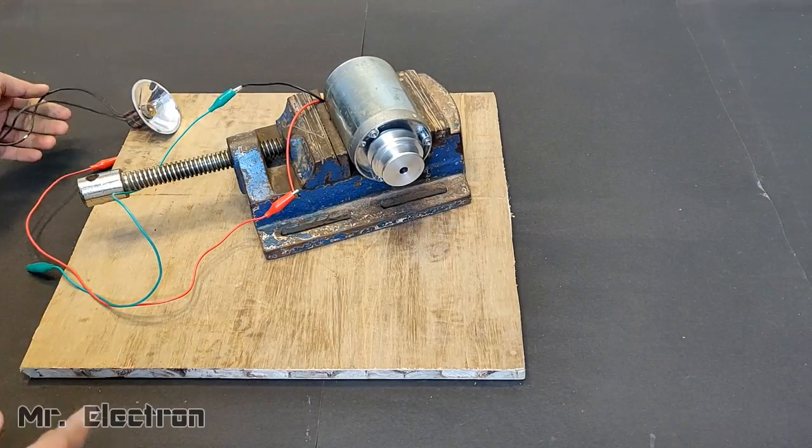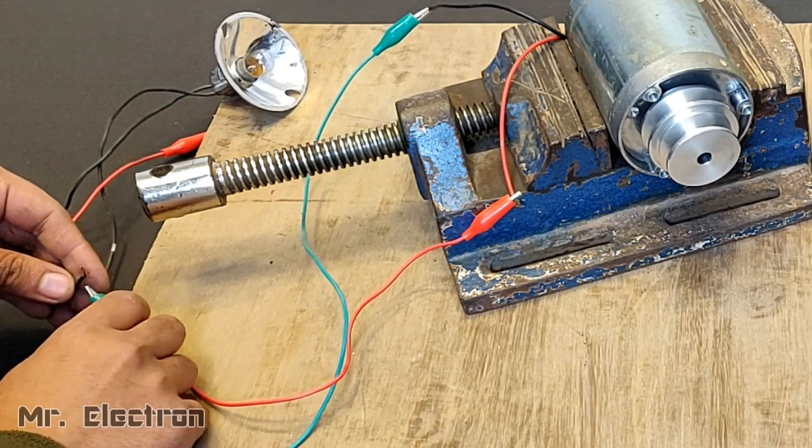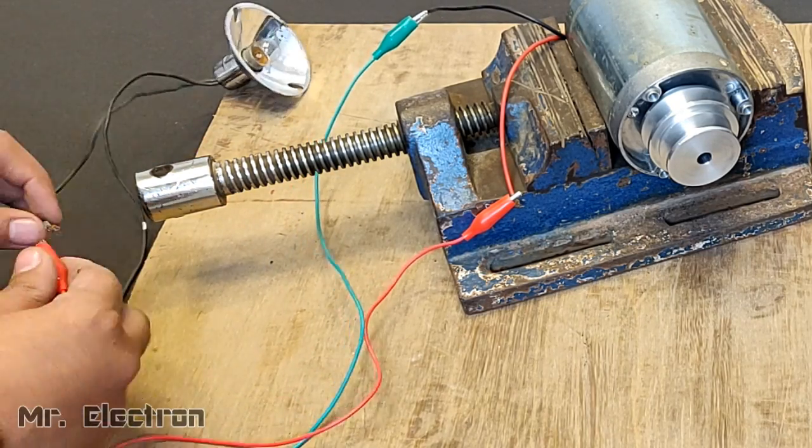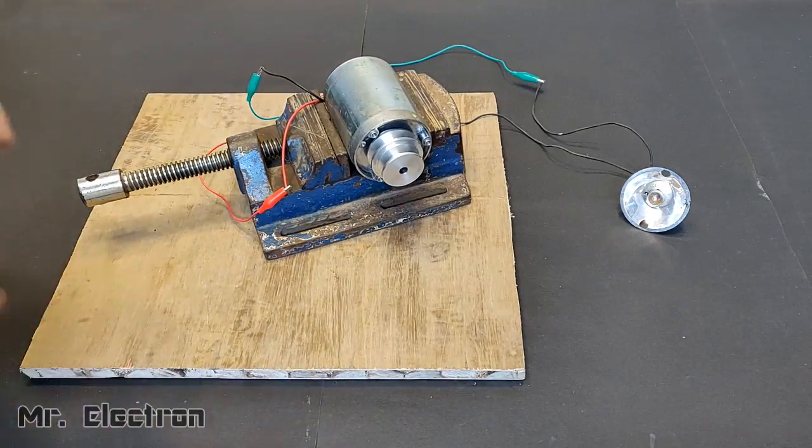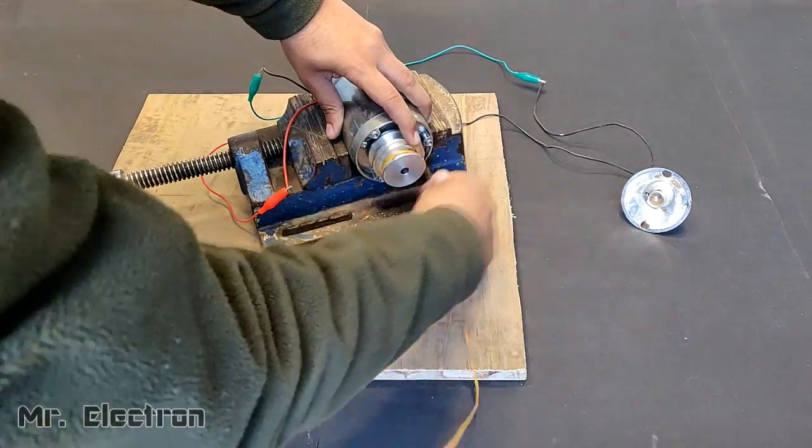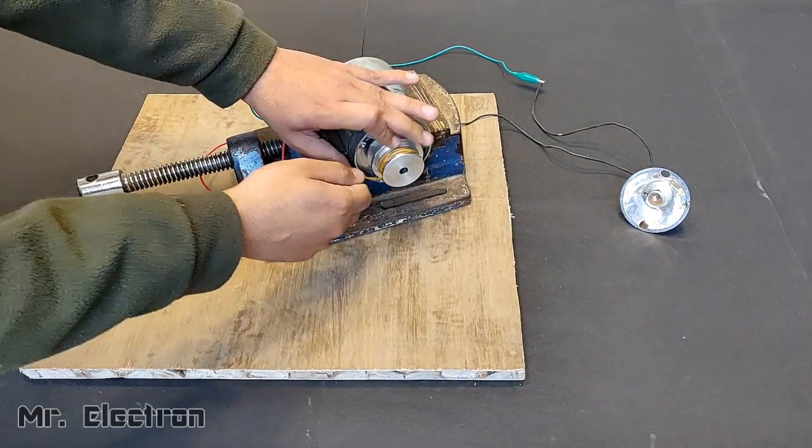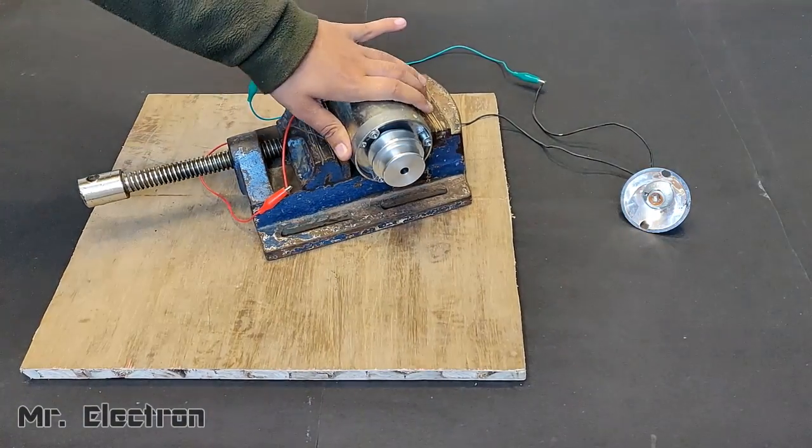You see this light, it is a 12 volts, 1 ampere light, meaning 12 watts. I am connecting this light bulb to this RO water purifier water pump motor. Let's wind the thread and see if it glows the bulb. You can see that it is glowing bright enough.